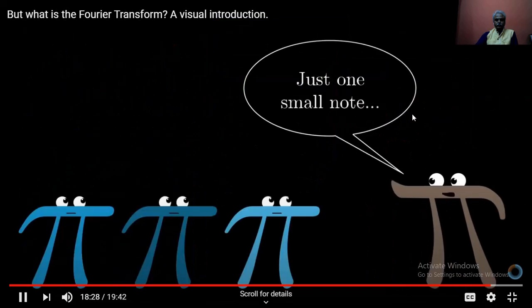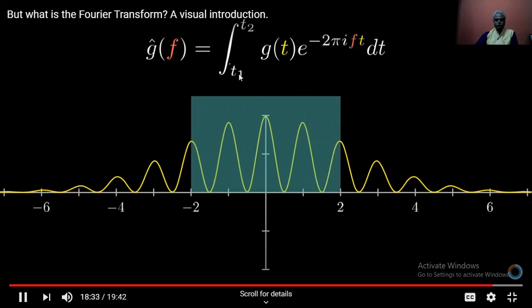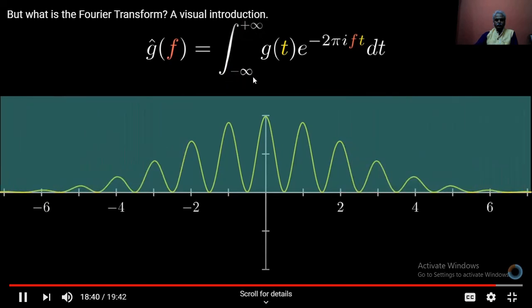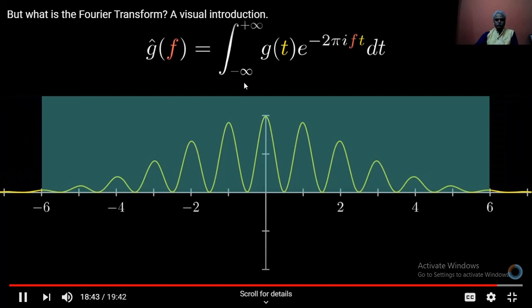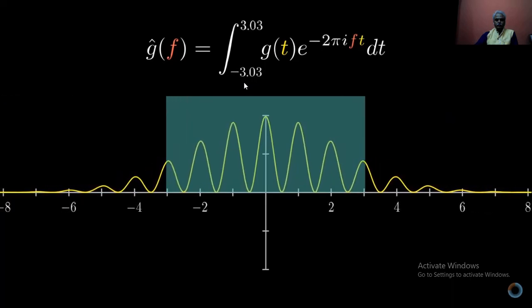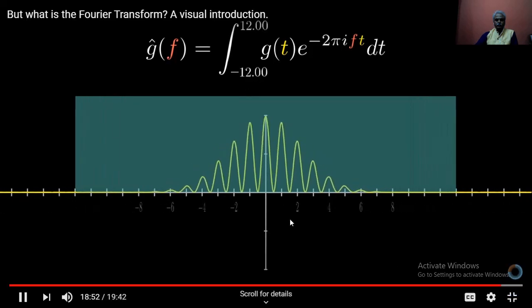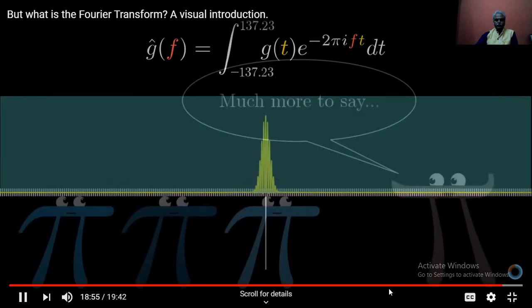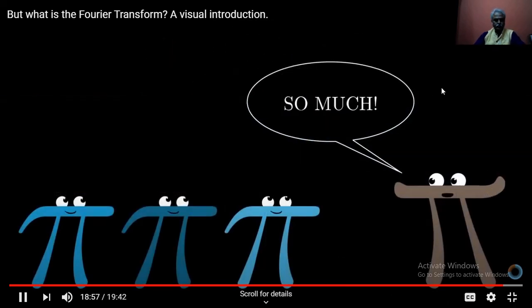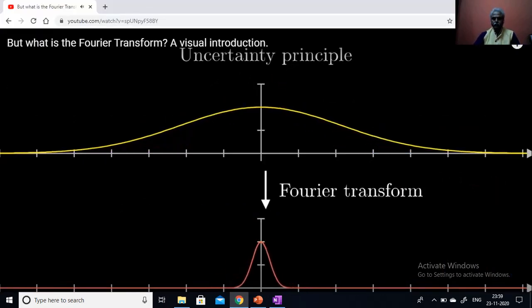And all of this is encapsulated inside that formula that we built up. Out of context, you can imagine how seeing this formula would seem sort of daunting. But if you understand how exponentials correspond to rotation, how multiplying that by the function g(t) means drawing a wound up version of the graph, and how an integral of a complex valued function can be interpreted in terms of a center of mass idea, you can see how this whole thing carries with it a very rich intuitive meaning. The theory of Fourier Transforms is often phrased where the bounds of this integral are negative infinity and infinity.